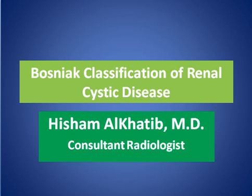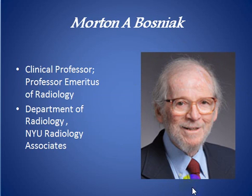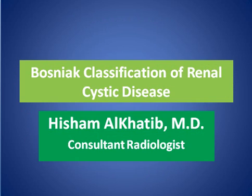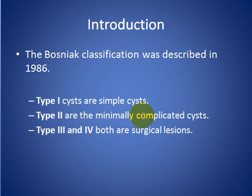My topic today is about Bosnian classification of renal cystic disease. Bosnian is a professor of radiology. In 1986, he introduced the classification of renal cysts, called the Bosnian classification, and he stated four types. Type 1 are simple cysts, Type 2 are minimally complicated cysts, and Types 3 and 4 are both surgical lesions.